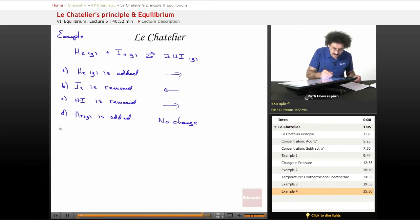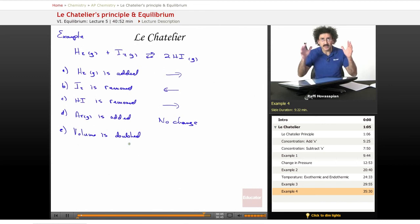Part E, volume is doubled. If we double the volume, it's going to be sort of the same as adding argon gas. That means the pressure is decreased. Volume is doubled means you're making the volume bigger, so you're decreasing the pressure.